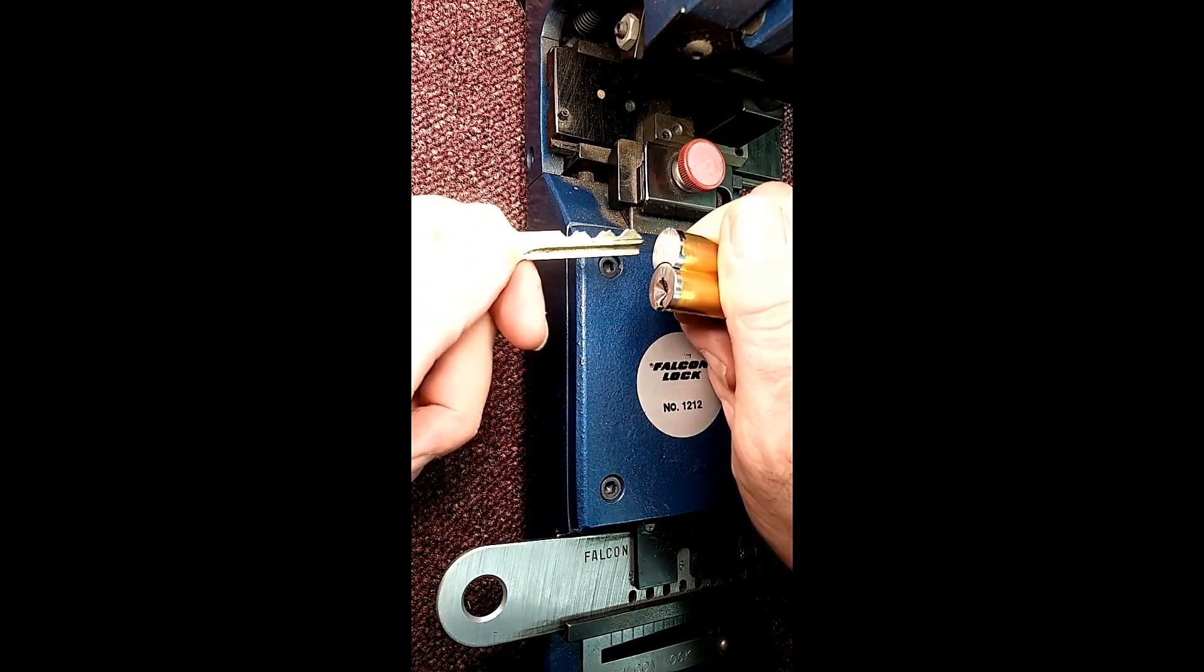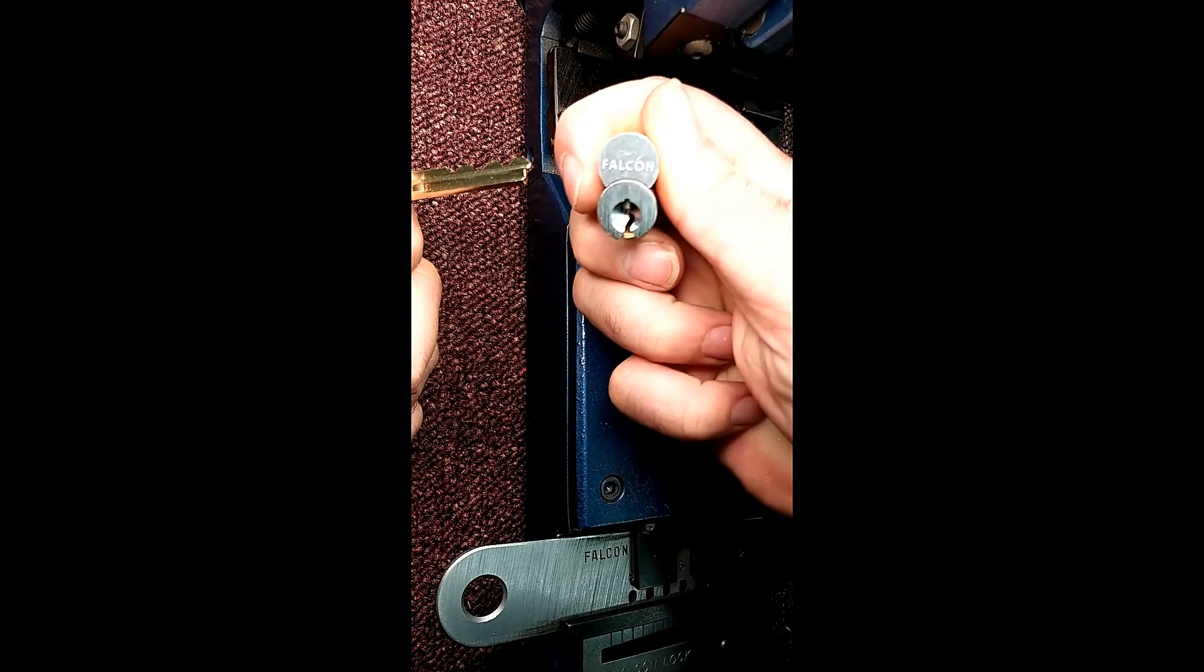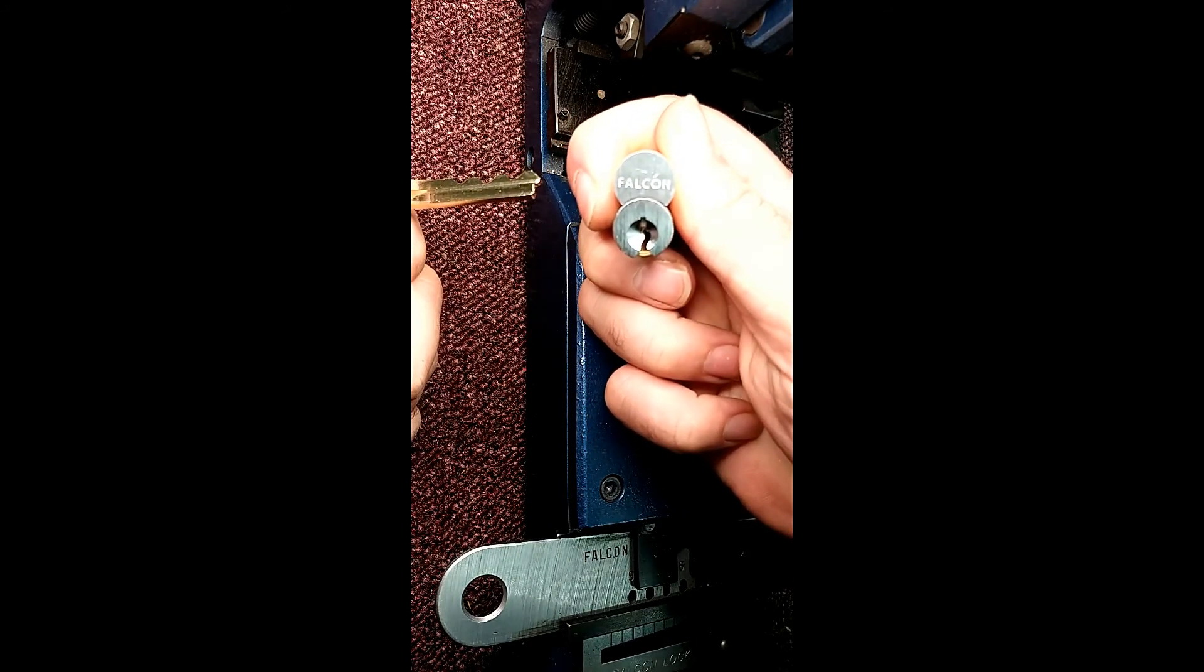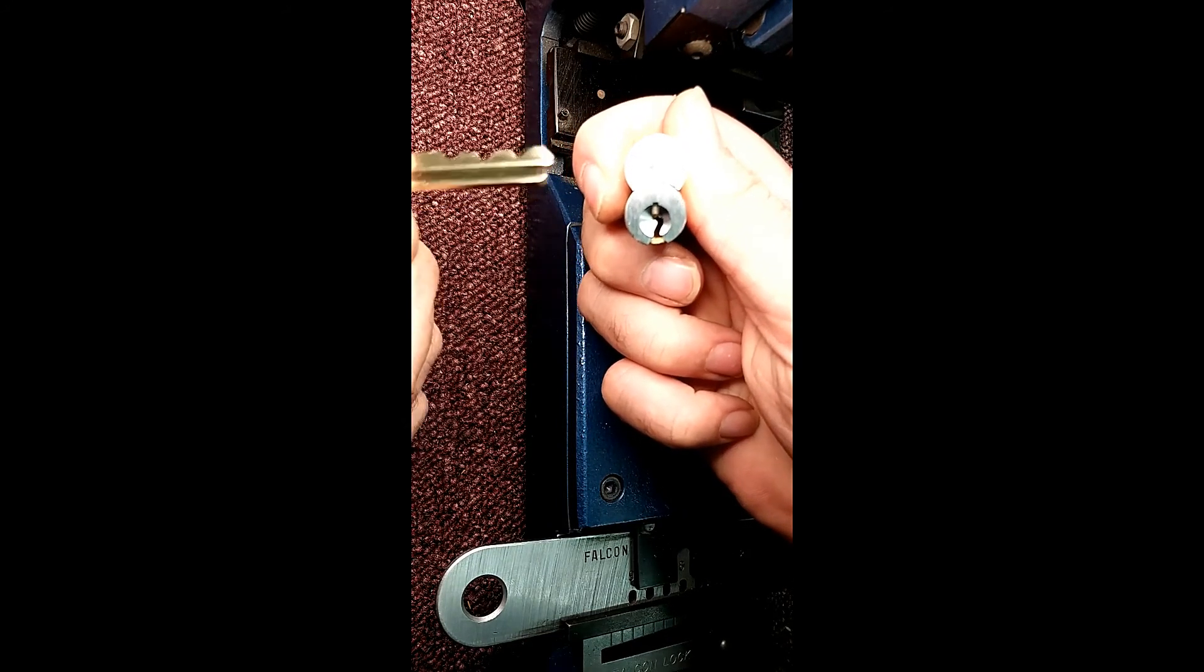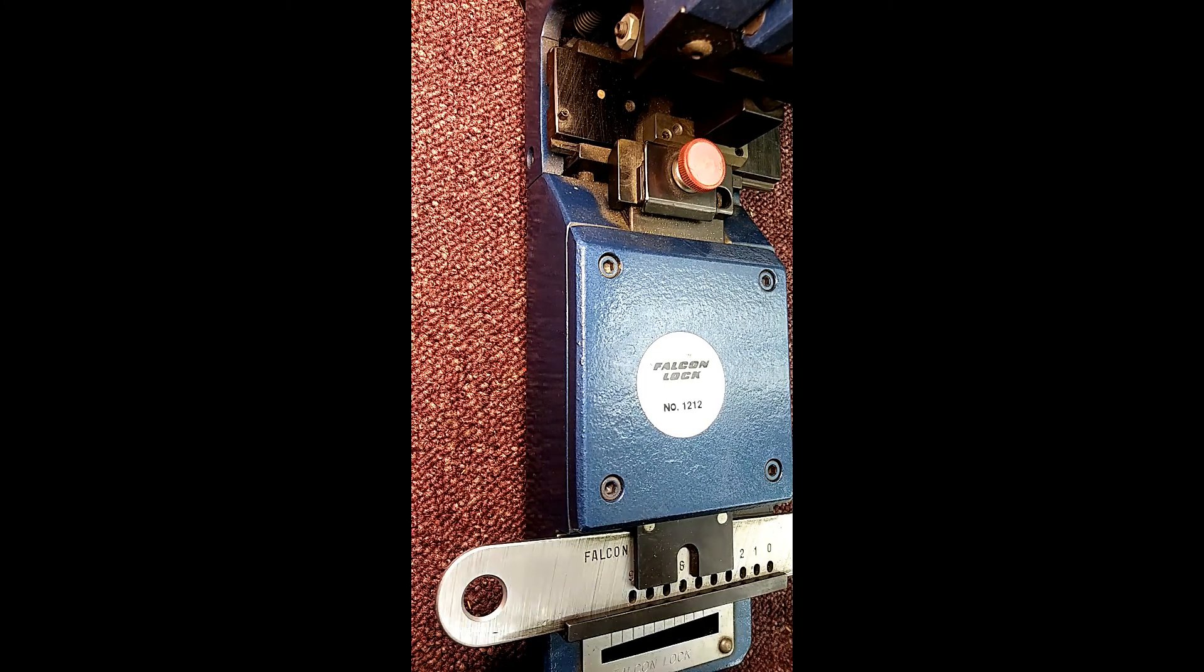So, not really in short, but in short, that is how you key a Falcon or Best or Arrow small format IC. And other than that, thank you very much for watching. If you have any questions, feel free to post them below. And as always, like, subscribe, and hope you have a great day. Thank you very much. Bye-bye.